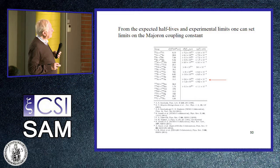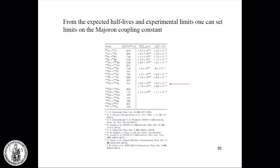The current limit on the coupling constant for majorons is 10 to the minus 5. They are coupled very weakly to the neutrinos. The limit coming from KamLAND-Zen is essentially 10 to the minus 5. Very weakly coupled, and we can give the limit.